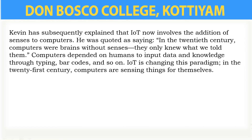We know that computers were depending on humans for data and knowledge — then only they were able to work. So IoT is different from those computers that were depending on humans for data and knowledge. In IoT, the computers can collect their own data and take decisions accordingly, without the help of a human being.